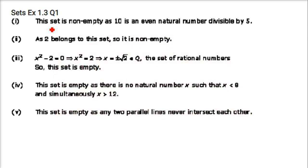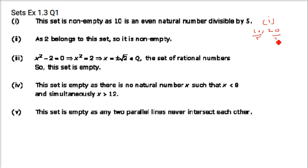The question asks: which of the following are examples of the empty set? The first is the set of all even natural numbers divisible by 5. We have numbers like 10, 20 — they are divisible by 5, so this set is not empty; it has various values.